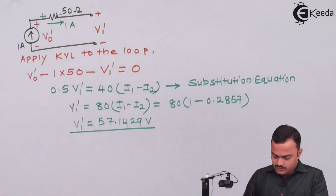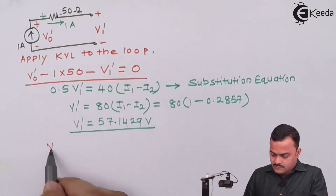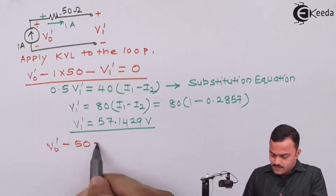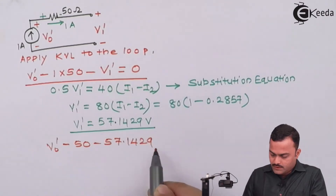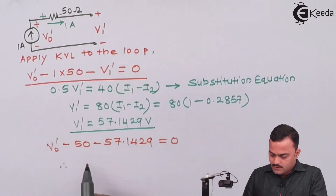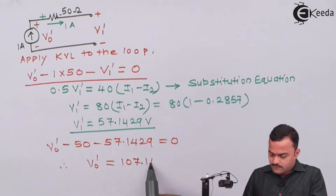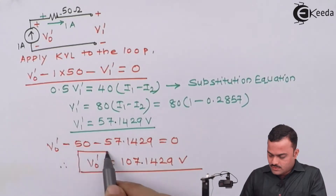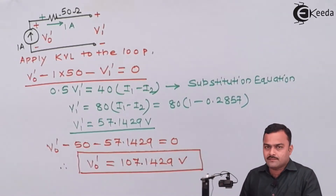Now we substitute V1' to get V0'. So V0' minus 50 minus 57.1429 = 0, which gives V0' = 107.1429 V. This is the voltage across the current source when considering 1 ampere acting alone.